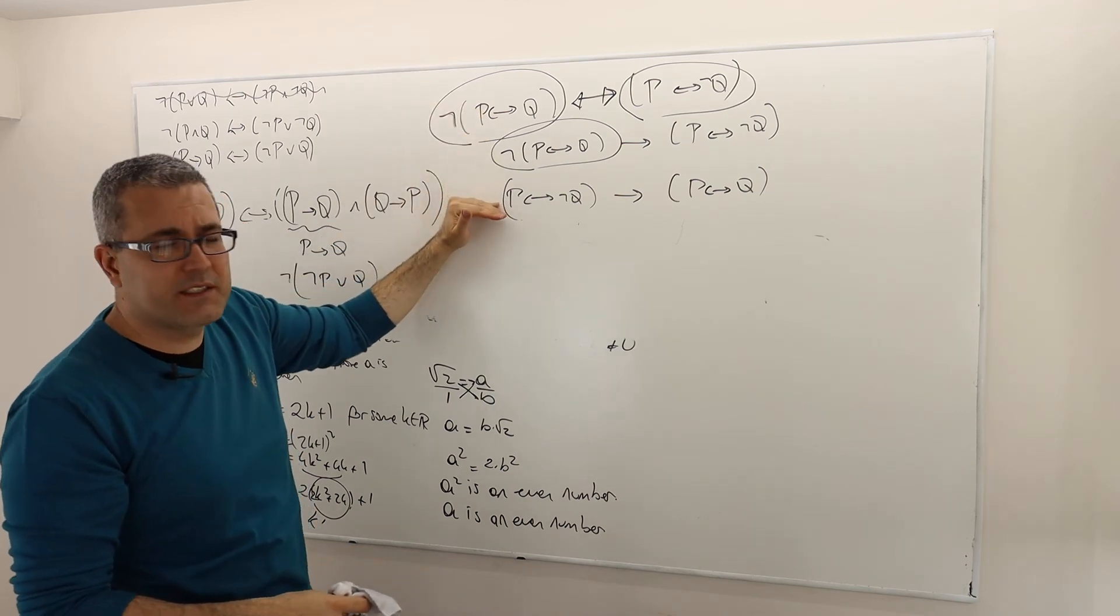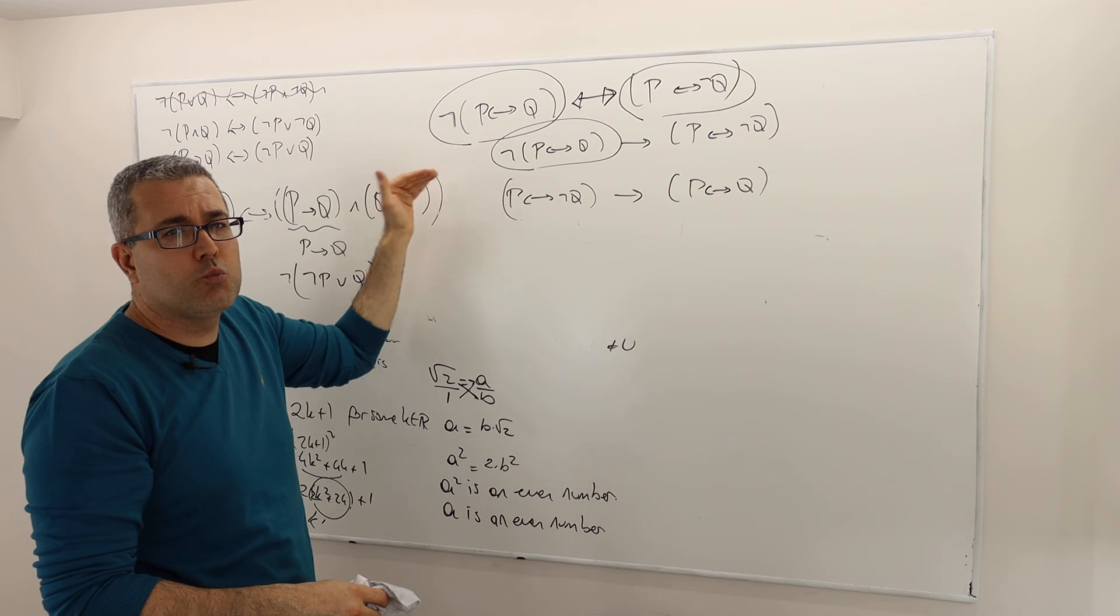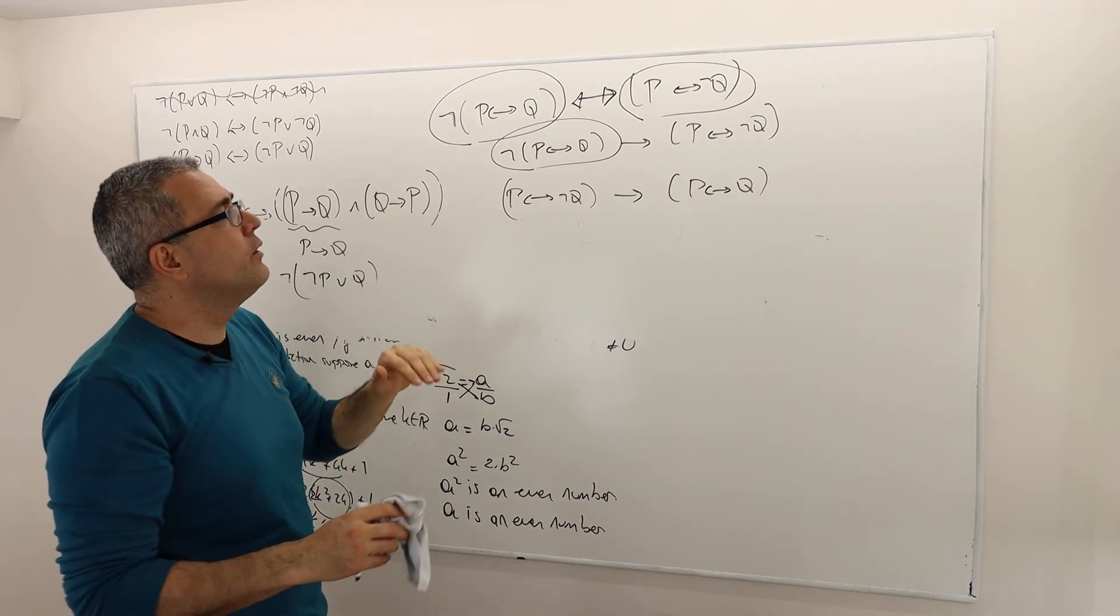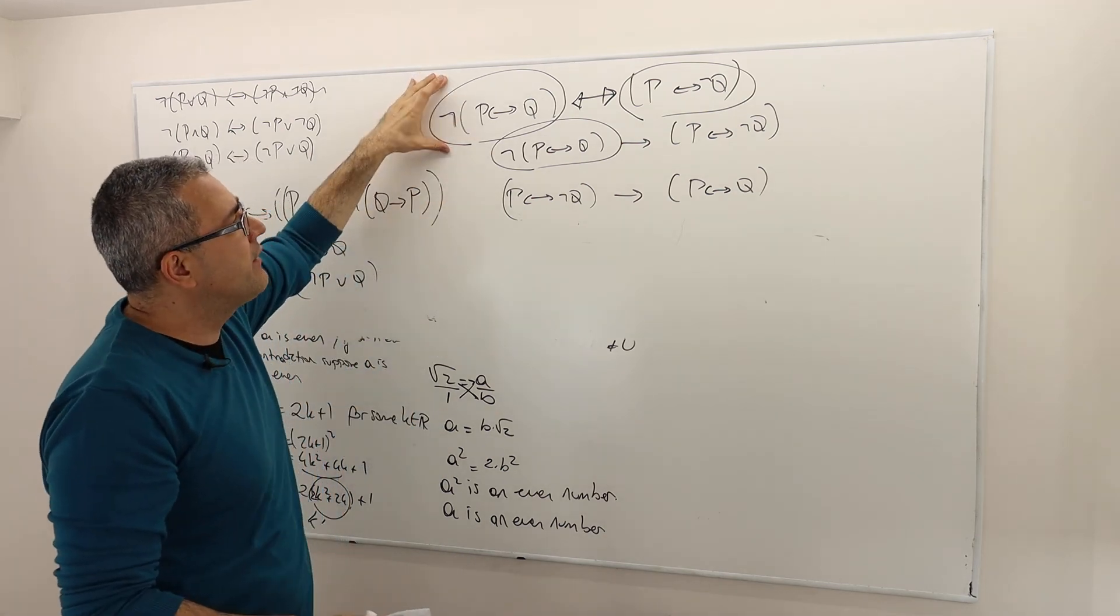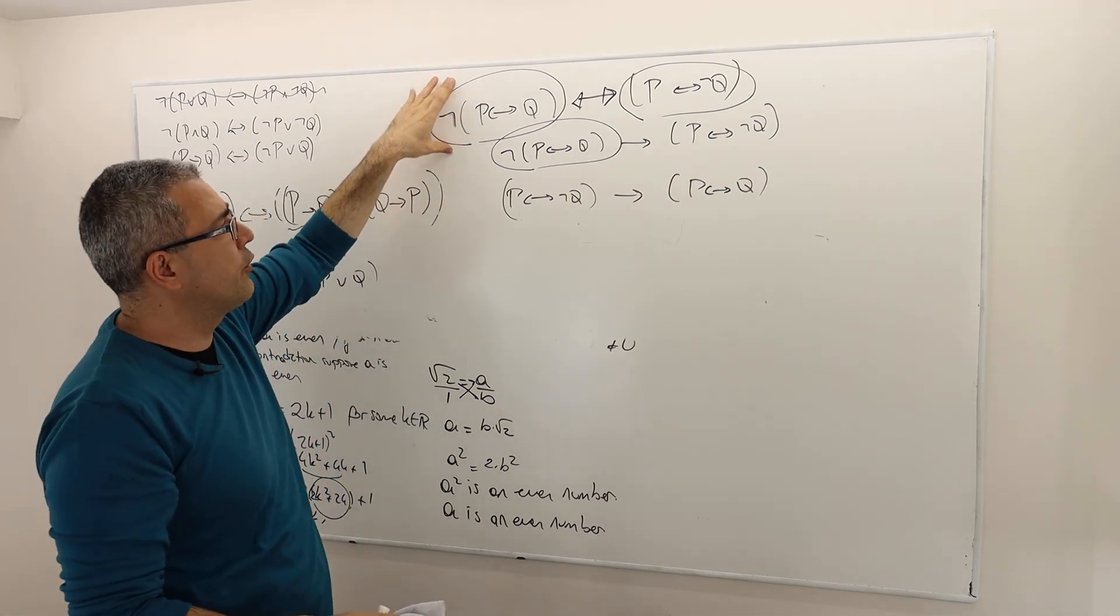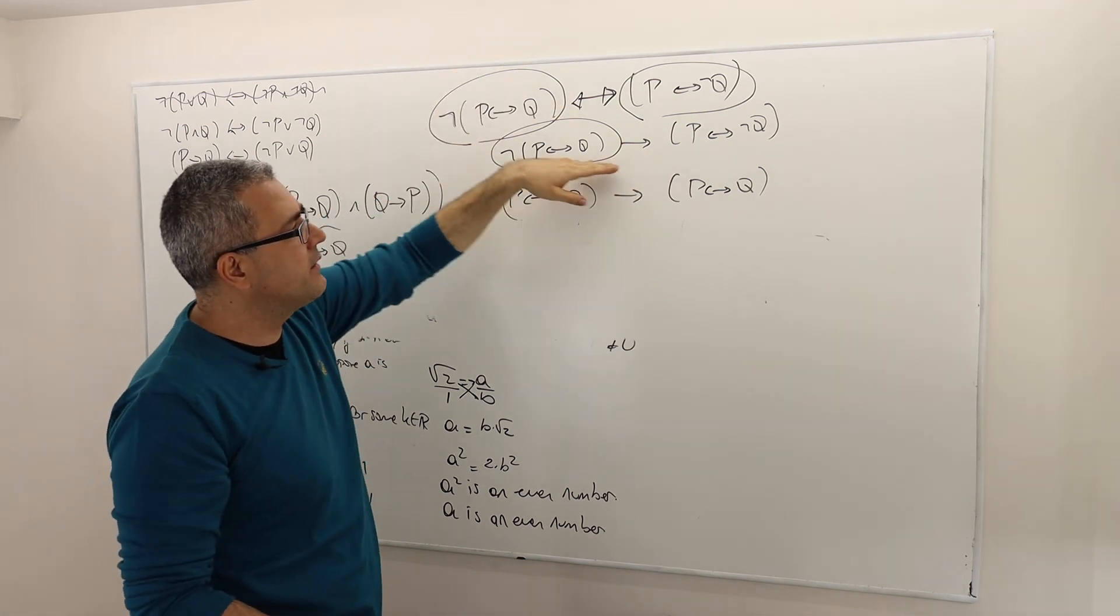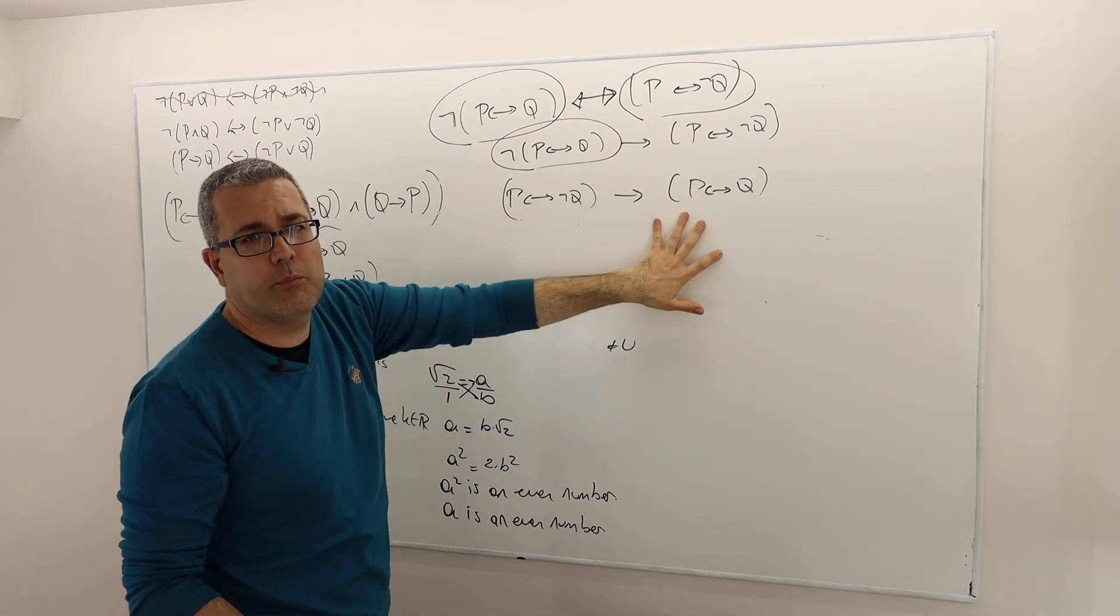So therefore, the proof of this theorem is going to be much easier when you use arguments one, two, three, and four. But nevertheless, use them or not. You have to make this argument. You have to prove this argument in two parts. The first part is if-then statement, and then the second part, well, this then part and then the if part. Okay?